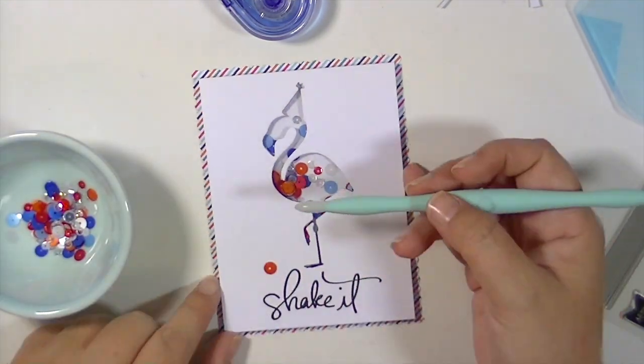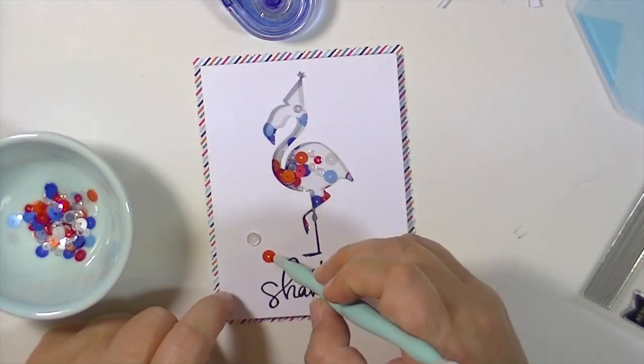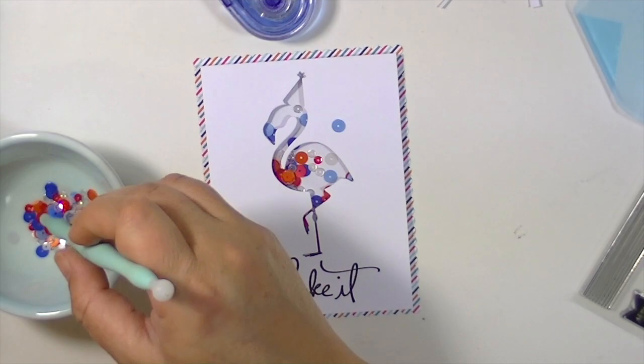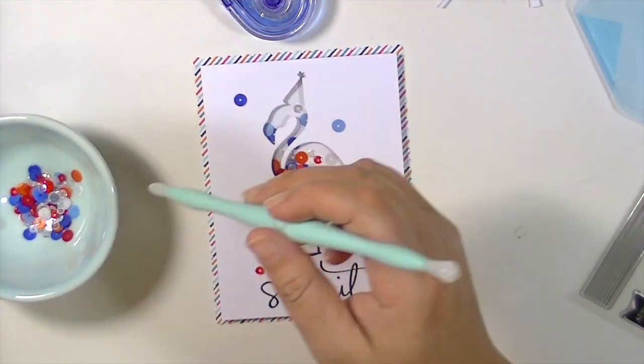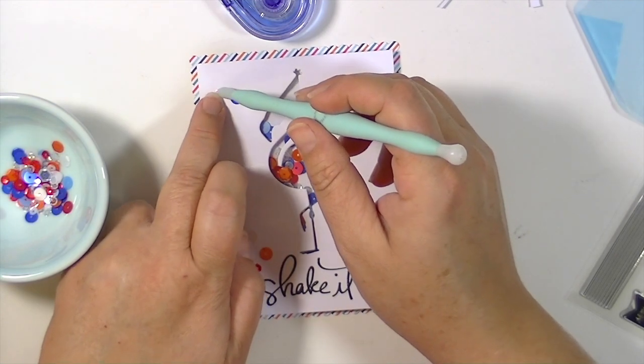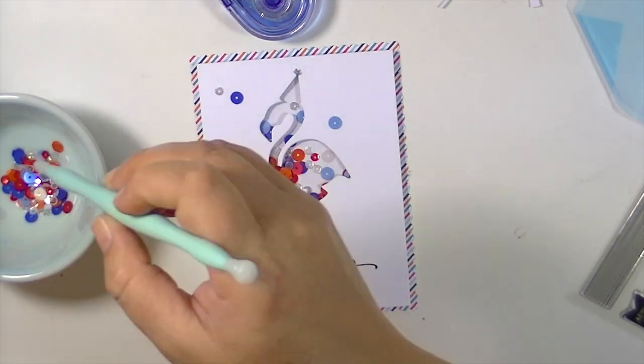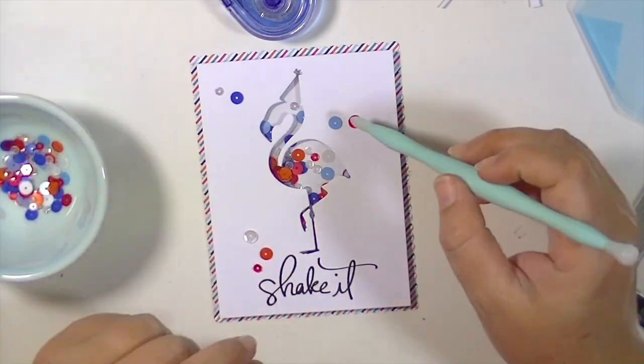And then I'm going to add some sequins on the front just to give it a little something extra. So I'm just going to place those around and then glue those down with the Ranger multi matte medium as well. And I did the same thing on the pink card so I just wanted to have consistency between the two.